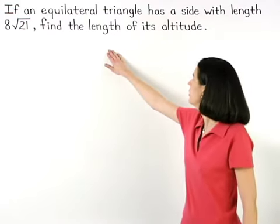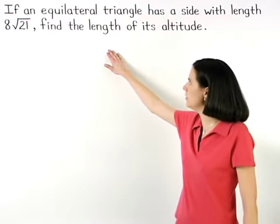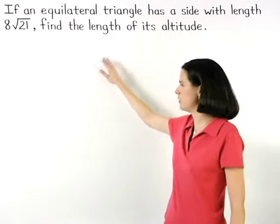If an equilateral triangle has a side with length 8 root 21, find the length of its altitude.